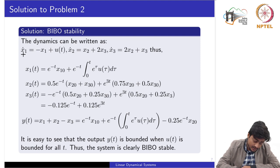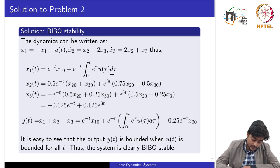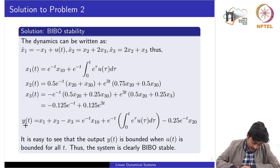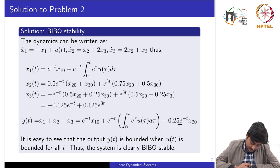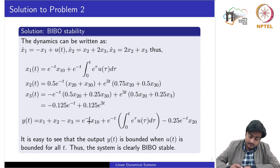The first equation's right-hand side does not contain x₂ or x₃, so x₁ can be solved separately using the variation of constants formula. Then using x₁ we compute x₂ and x₃ for the given initial conditions. Computing y(t) as the sum of the first two states minus the third state, we can show that given a bounded input u, we obtain a bounded output for all t — so this system is clearly BIBO stable.